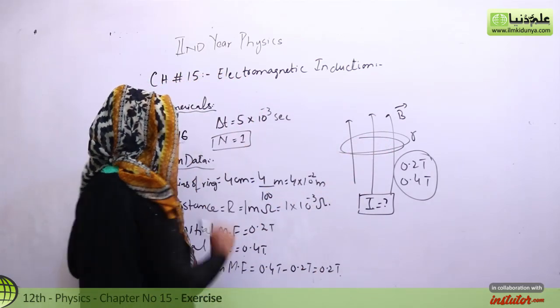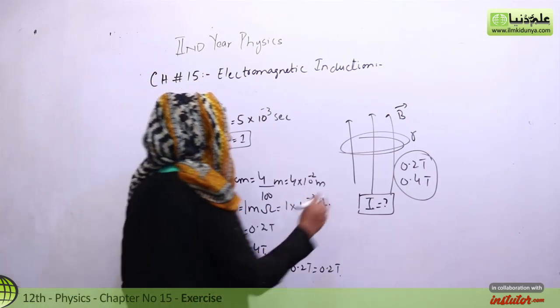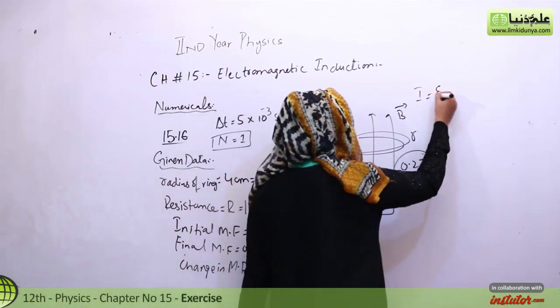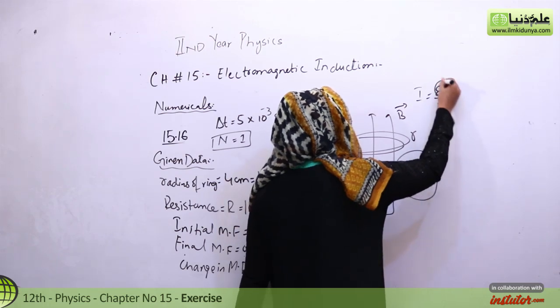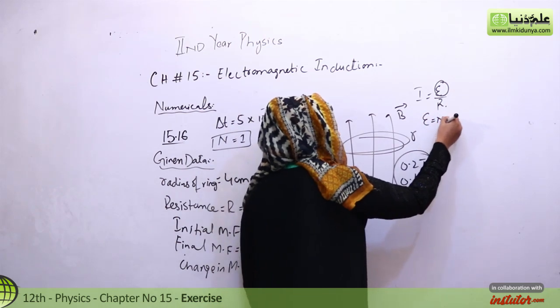The number of turns is not known here, so we can consider it one. For the formula, students, we will not find the current first. For current, we have the formula I equals E over R. First, we need to find the induced EMF.